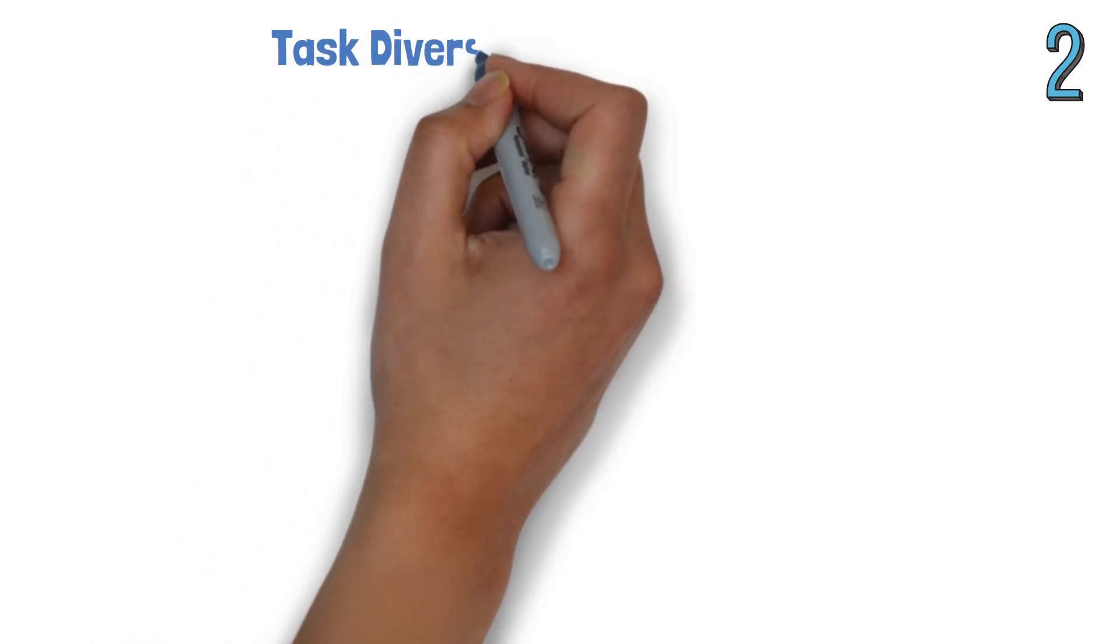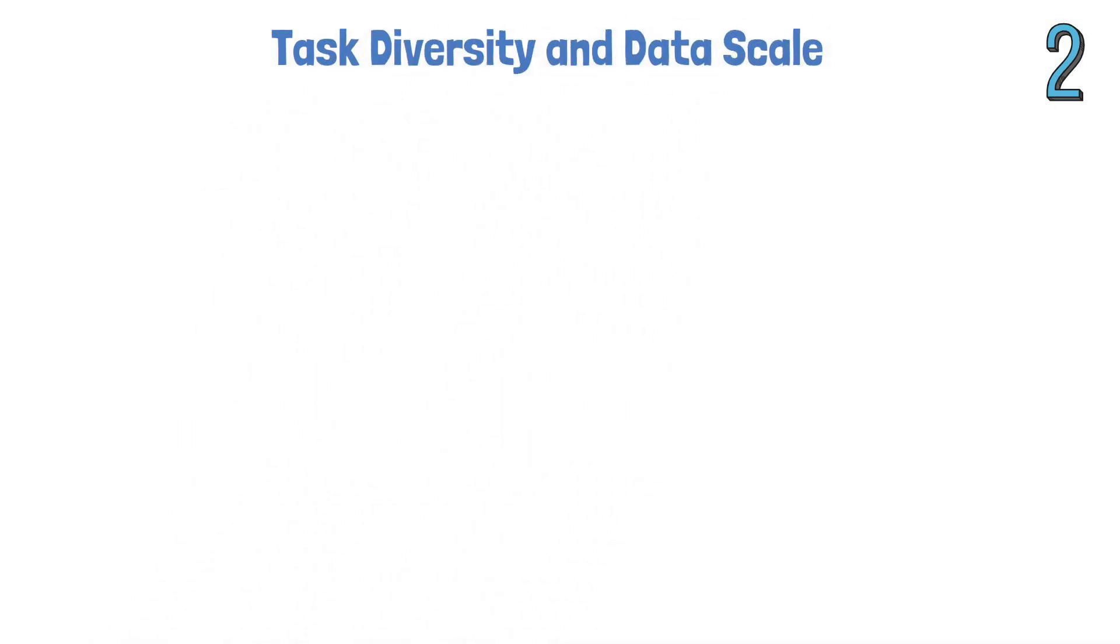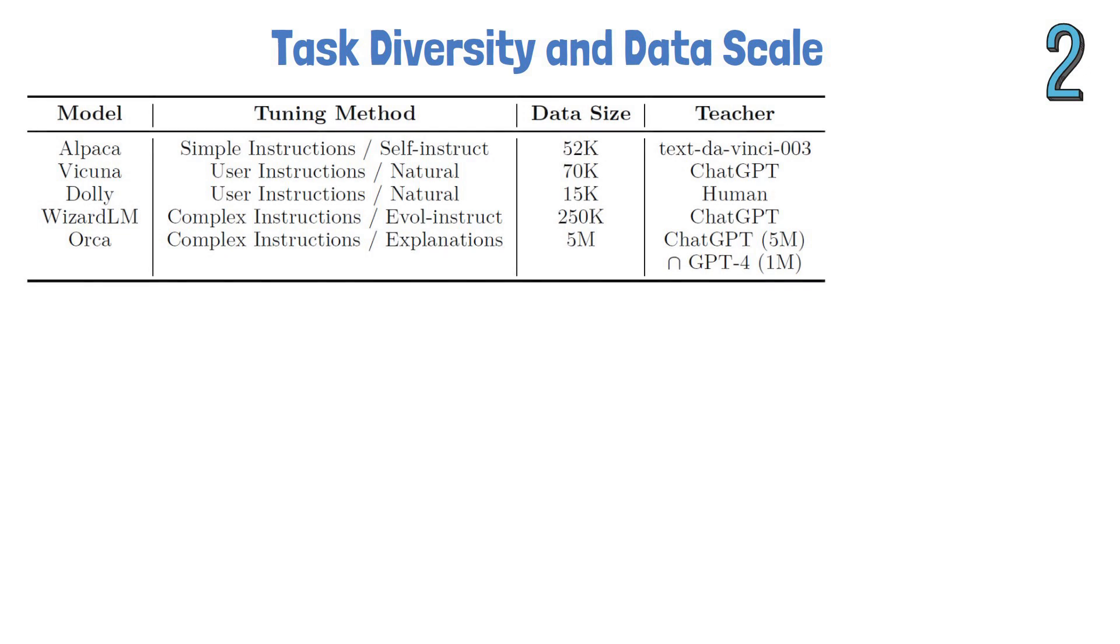The second key factor that helps ORCA stand out is task diversity and data scale. In the following table from the paper, we see a comparison of data sizes used by models from the same family,